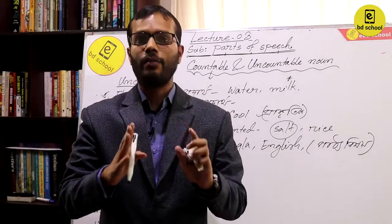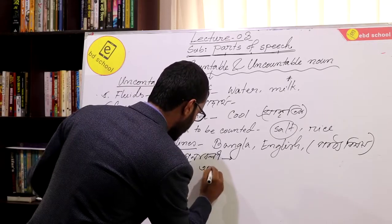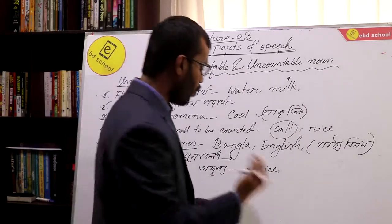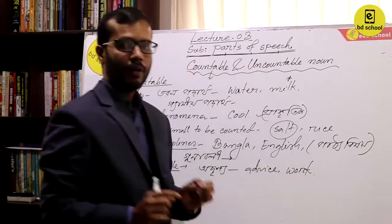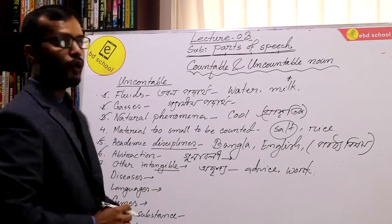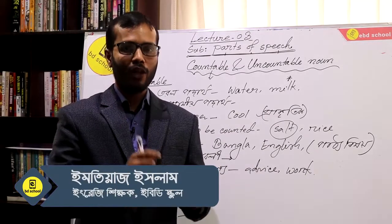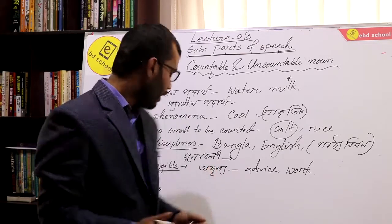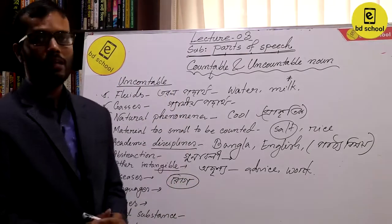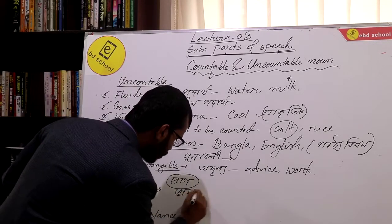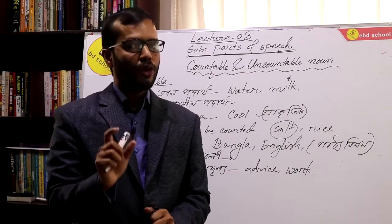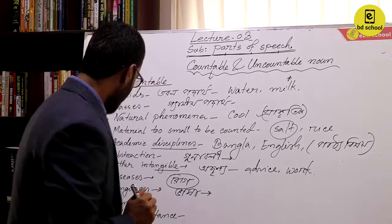Things that are invisible — things we cannot see with our eyes — are also uncountable. For example, diseases: cholera, malaria — these disease names are uncountable. Languages such as Bangla and English are also uncountable. The name of a language is uncountable.